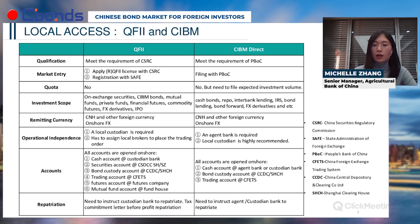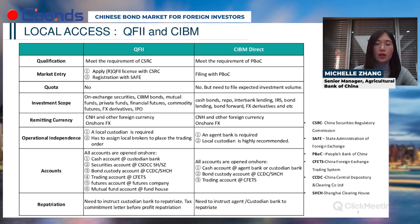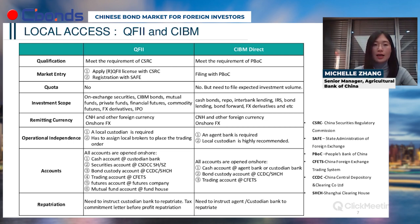Comparing QFII and CIBM Direct: for market entry, QFII requires applying for a QFII license with CSRC and making a registration with SAFE, while CIBM Direct requires a filing with PBOC. There is no quota under either scheme now, but under CIBM Direct you need to file an expected investment volume. QFII has the largest investment scope of all options — you can invest in the exchange market, CIBM market, and even the futures market — while CIBM Direct is limited to the CIBM bonds and related instruments.